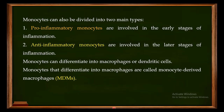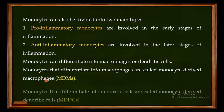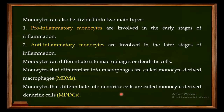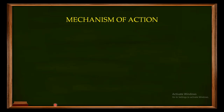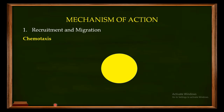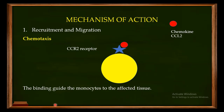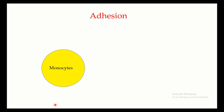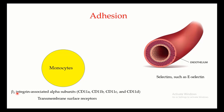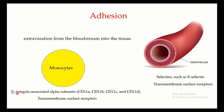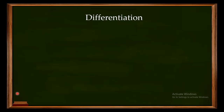Monocytes can differentiate into macrophages — called monocyte-derived macrophages — or into dendritic cells, called monocyte-derived dendritic cells. Regarding the mechanism of action, monocytes express receptors such as CCR2 on their surface; CCR2 interacts with chemokines like CCL2, guiding monocytes to the affected tissue. During adhesion, beta-2 integrin-associated alpha subunits on the monocytes interact with selectins on the endothelium, driving extravasation and movement from the bloodstream into the tissue.